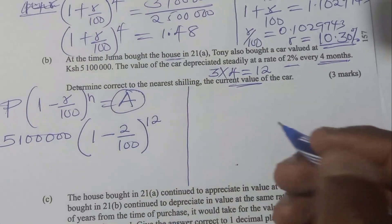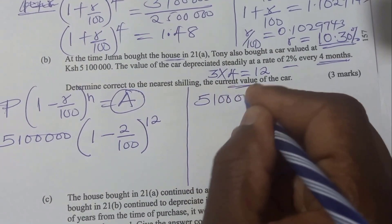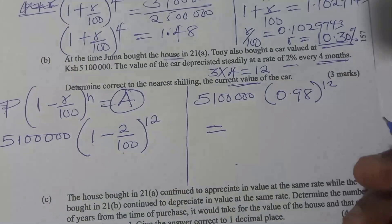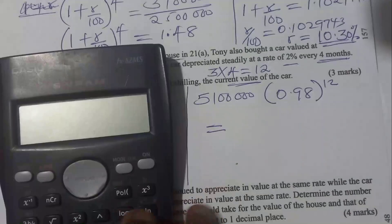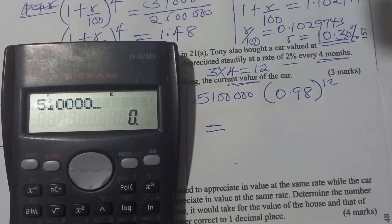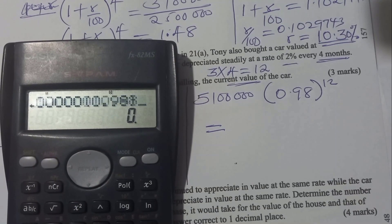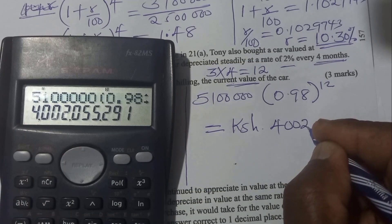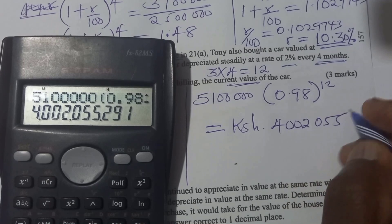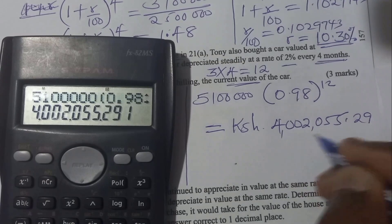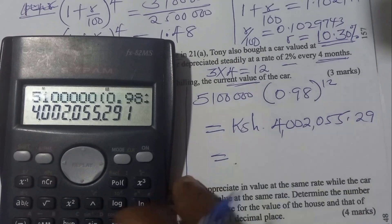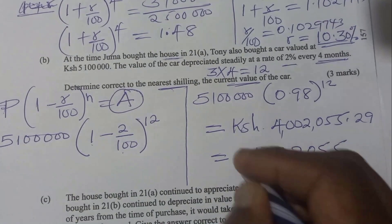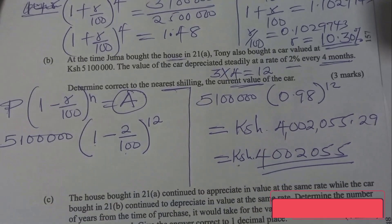So working out: A equals 5.1 million multiplied by 0.98 raised to the power 12. Using a calculator, this gives 4,002,055.29. Correct to the nearest shilling, the current value of the car is 4,002,055 shillings.